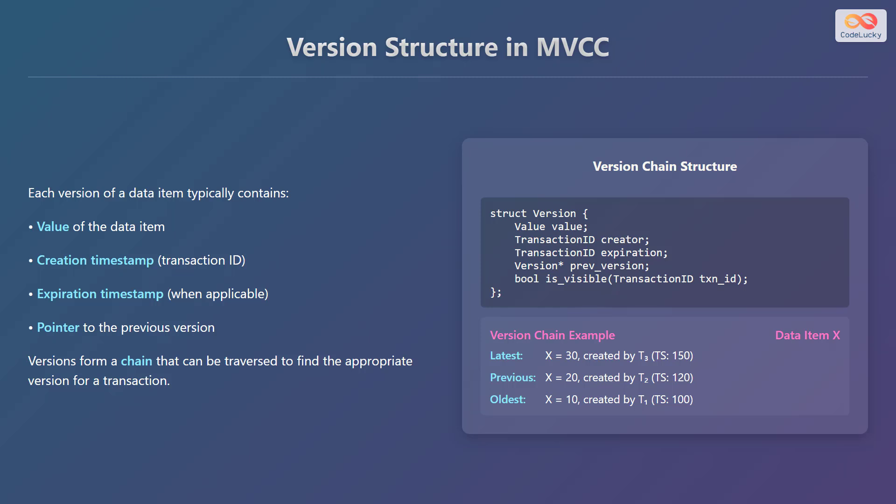As you can see in the code snippet, a version is generally a struct which contains value, transaction ID of the creator, transaction ID of when it expires, a pointer to the previous version, and a function which checks if the version is visible to a particular transaction ID.